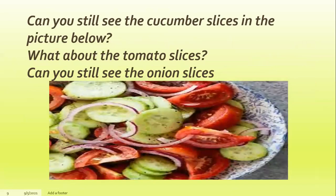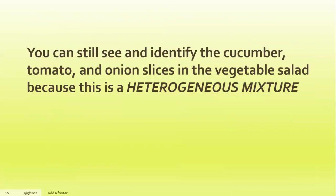This kind of mixture is called a homogeneous mixture. Look at this picture. Can you still see the cucumber slices? What about the tomato slices? Can you still see the onion slices? Well, you can still see and identify the cucumber, tomato, and onion slices in the vegetable salad because this is a heterogeneous mixture.